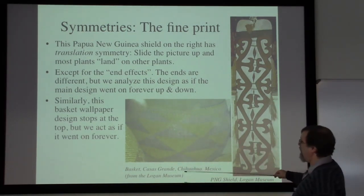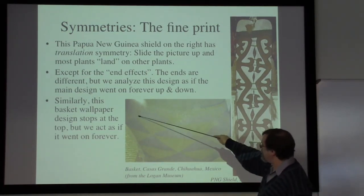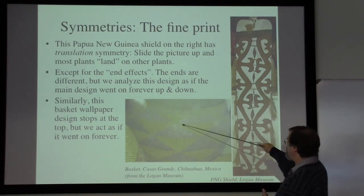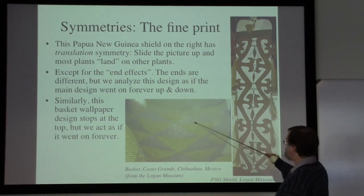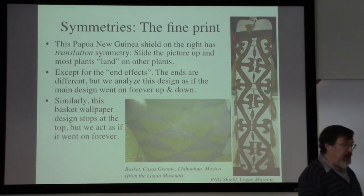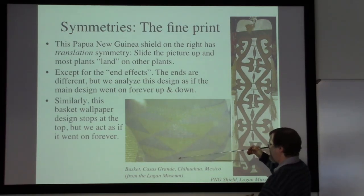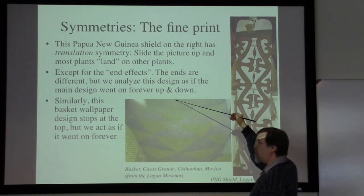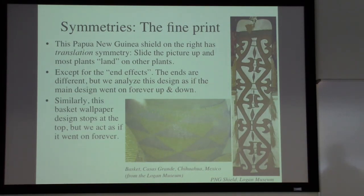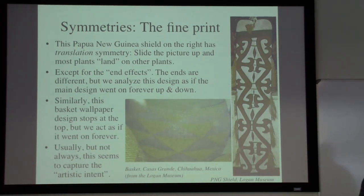This basket from Mexico has what we'll be calling wallpaper patterns. At the top the basket doesn't go on forever, but we understand the artistic intent — the artist, if they had made it bigger, would have finished the next brown triangle. For symmetry analysis, this brown triangle translates up to the next, and we imagine these patterns continuing forever, which in most cases captures the artist's intent.